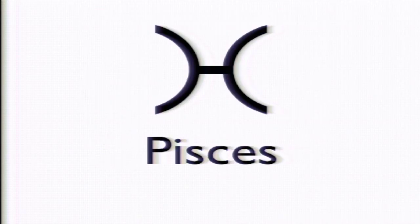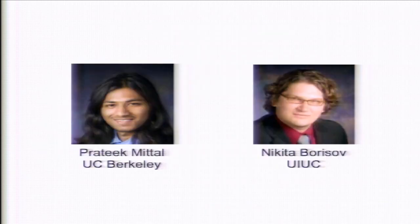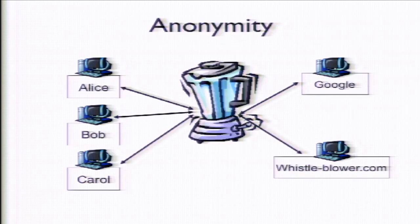Okay, so with that I'm going to start talking about the two systems that make up the core of the work in this area. One of these is Pisces. Pisces is joint work done by Pratik Mittal, who is post-doc at UC Berkeley, and his advisor Nikita Borisov at Illinois. Before I get into the details of the system, I need to intro a little bit about anonymity systems. I mentioned the Tor system, that's an anonymity system, and I'm going to explain a little bit about how these work. An anonymity system is going to be one in which we have Alice and Bob and Carol on the left, and they want to talk to Google and whistleblower.com, and we don't know who wants to talk to whom.